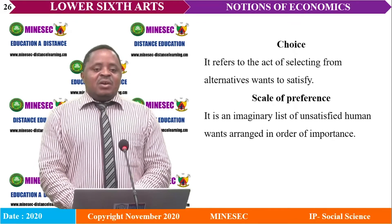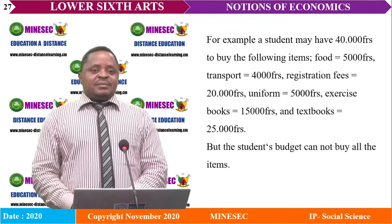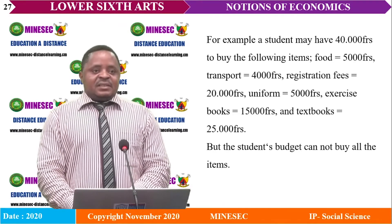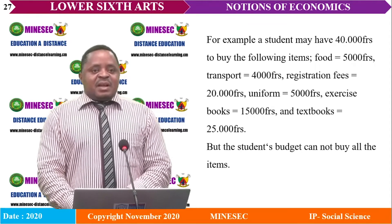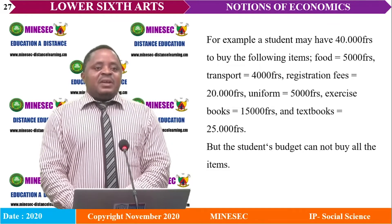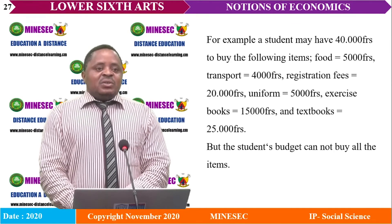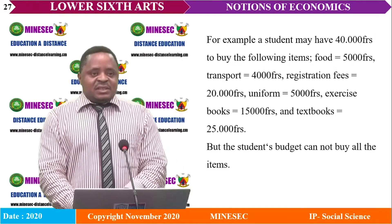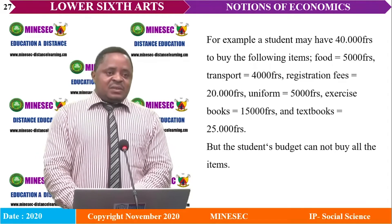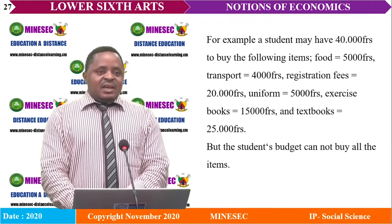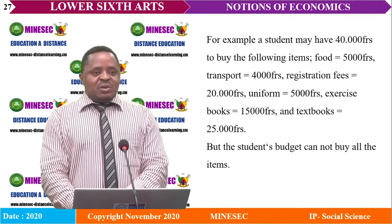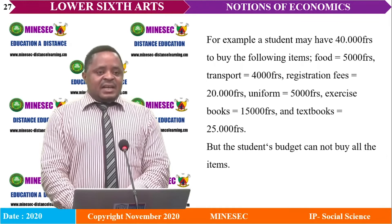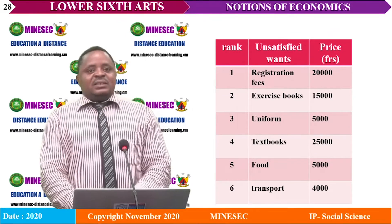Selection is only possible if there is a scale of preference. For example, a student may have a sum of 4,000 francs to buy the following items: food costing 5,000; transport costing 4,000; registration fees costing 20,000; uniform costing 5,000; exercise books costing 15,000; and textbook costing 25,000. With a budget of 40,000, this student cannot buy all the items. The student may rank the items starting with the most pressing ones.